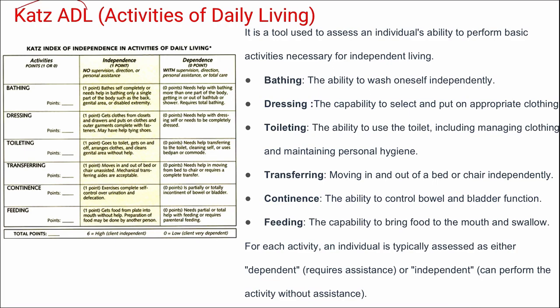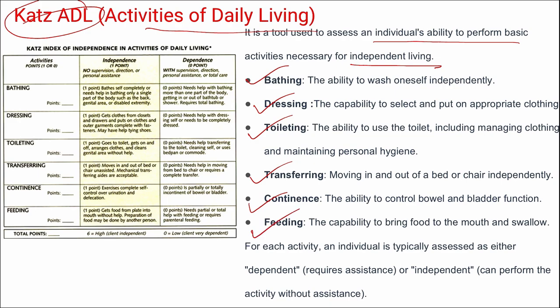Next is the Katz ADL — Activities of Daily Living questionnaire — used to assess an individual's ability to perform basic activities necessary for independent living. Activities considered include bathing, dressing, toileting, transferring, continence, and feeding. One point is given for independence and zero for dependence, so a score of six indicates the individual is highly independent and zero indicates full dependence requiring assistance.